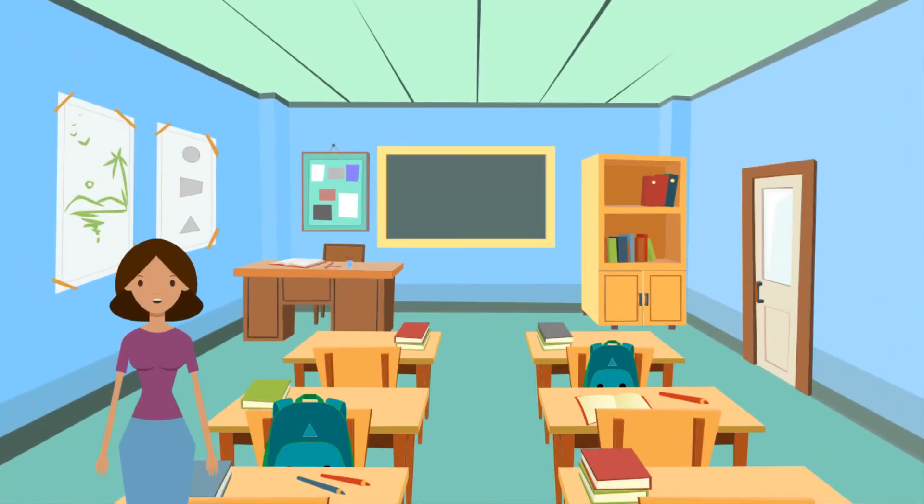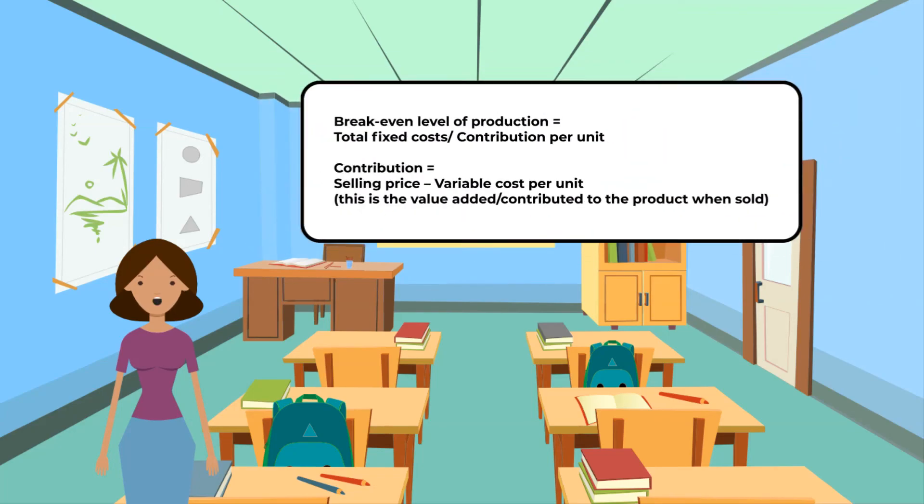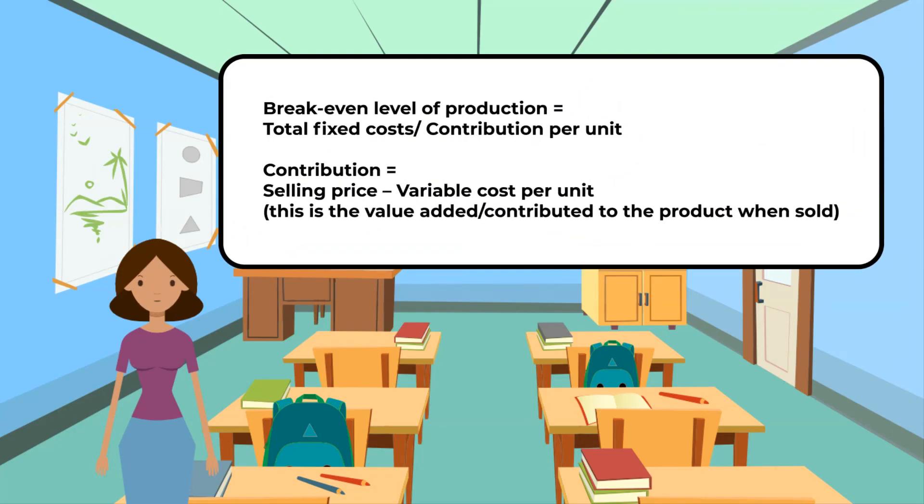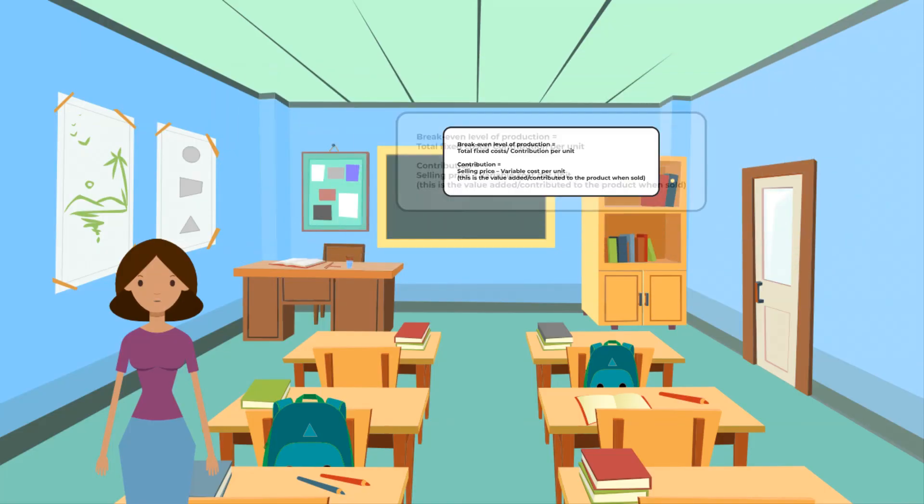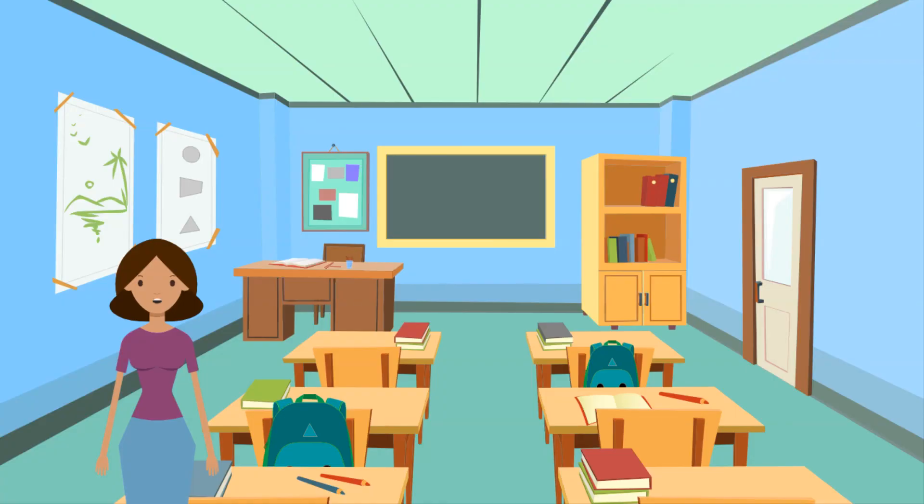Breakeven can also be calculated without drawing a chart. The following formula can be used: breakeven level of production equals total fixed cost divided by the contribution per unit. Contribution per unit is equal to the selling price minus the variable cost per unit. This is the value added or contributed to the product when sold. In the worked example, the contribution is eight dollars minus three dollars, which equals five dollars. So the breakeven level is five thousand dollars divided by five dollars, which equals one thousand units.